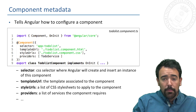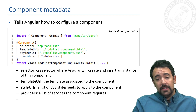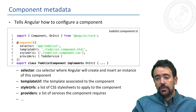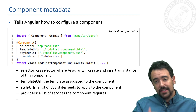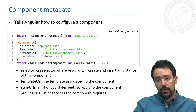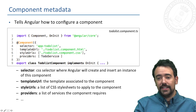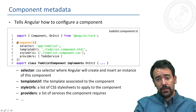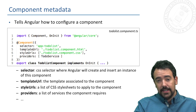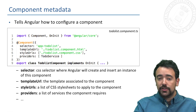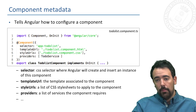The component metadata is the information we include in the component decorator in order to specify several configurations of the component, as we can see here in this example. We use the selector option to tell Angular which HTML selector it has to render this component in.